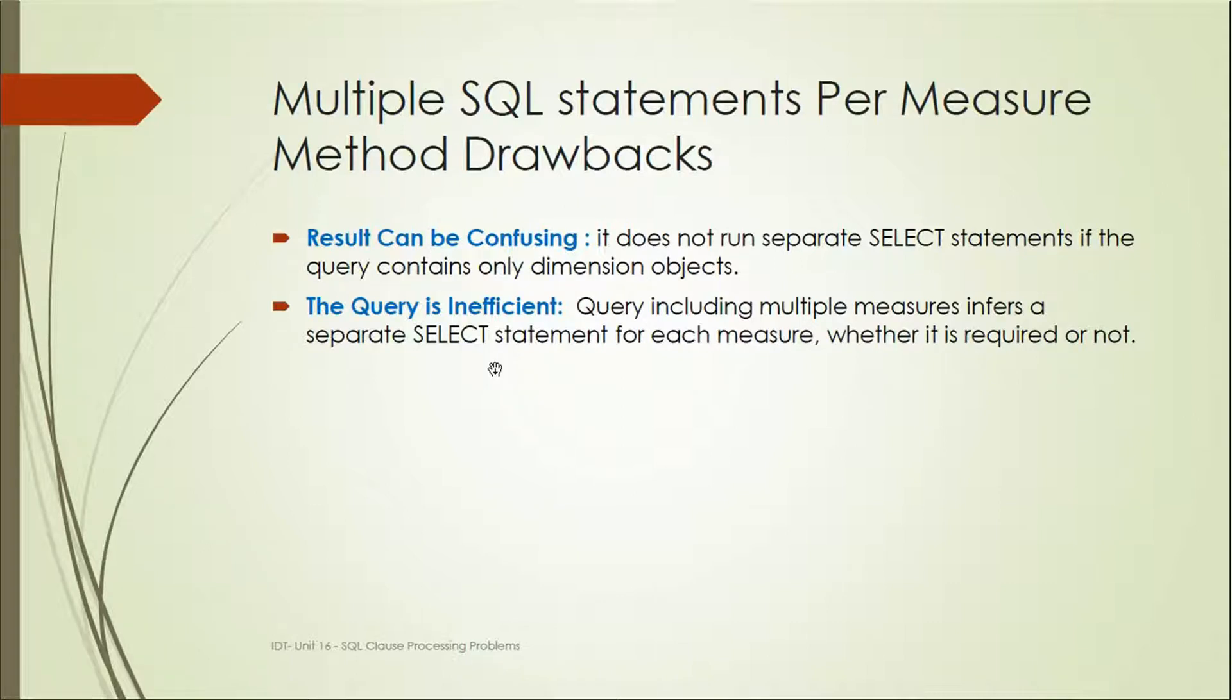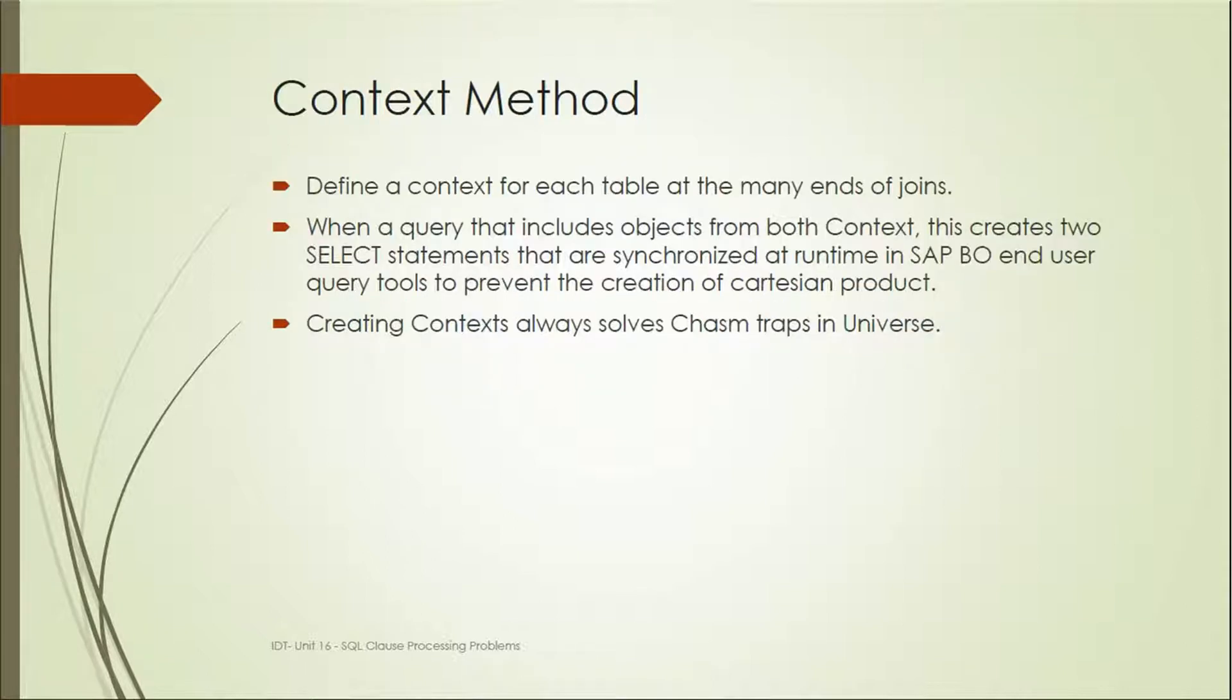This method's drawbacks: the result can be confusing or the query is inefficient. The context method is more useful where we can define a context for each table at the many ends of the join. When a query includes objects from both contexts, this creates two SELECT statements that are synchronized at runtime in SAPBO.